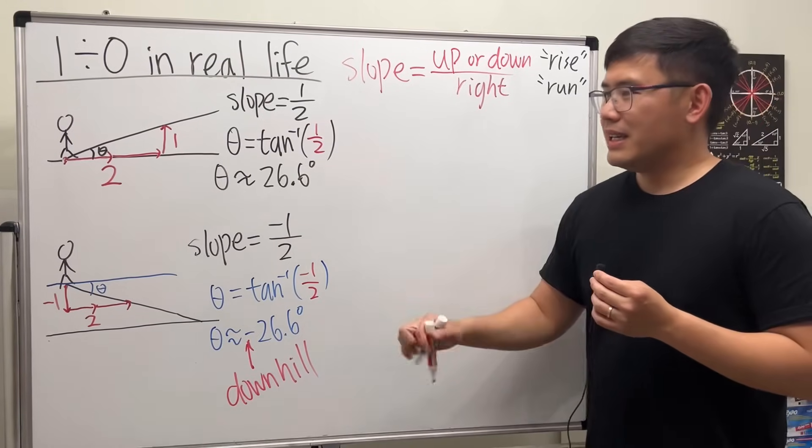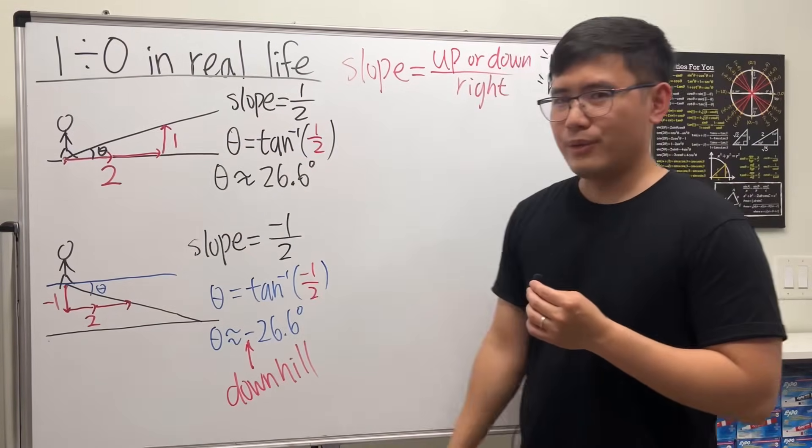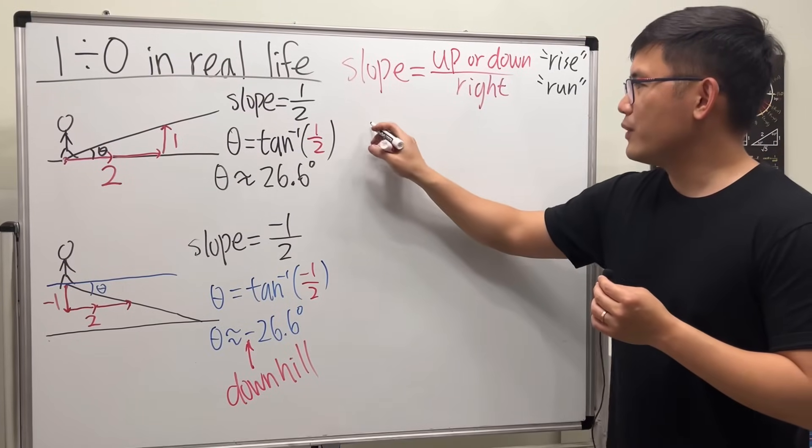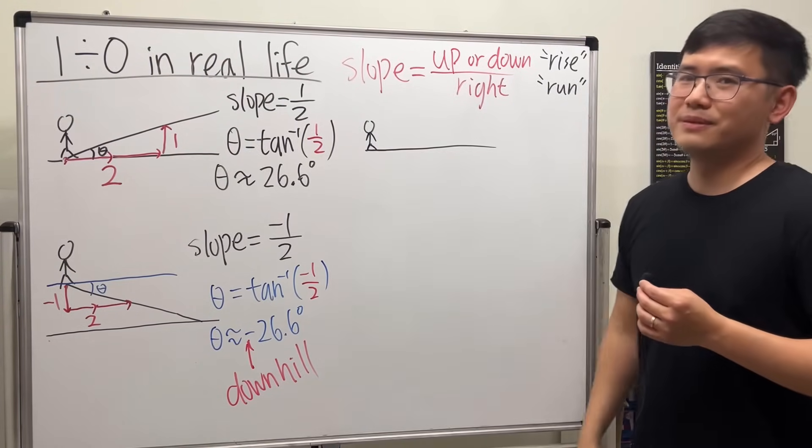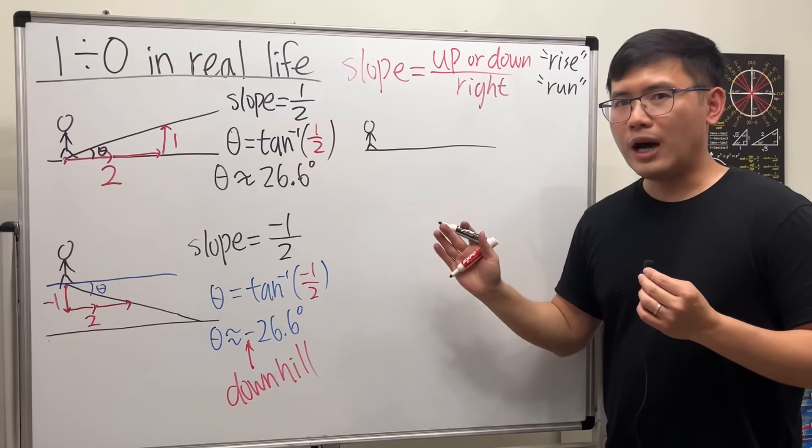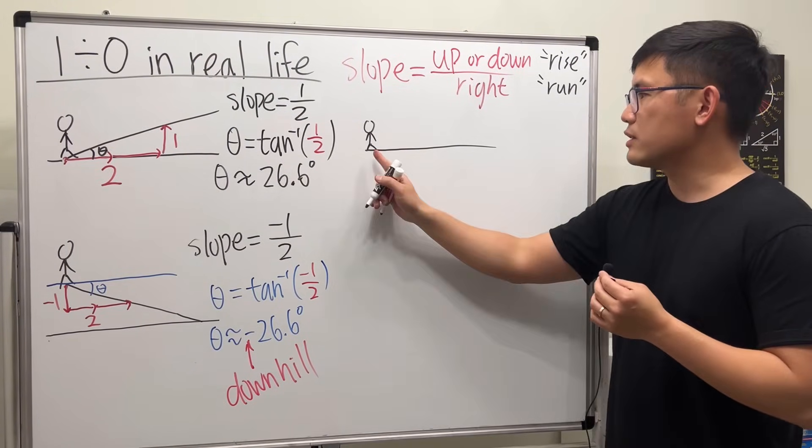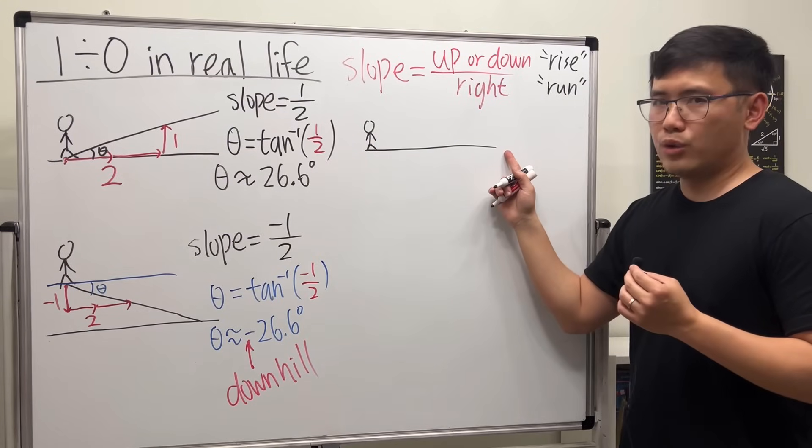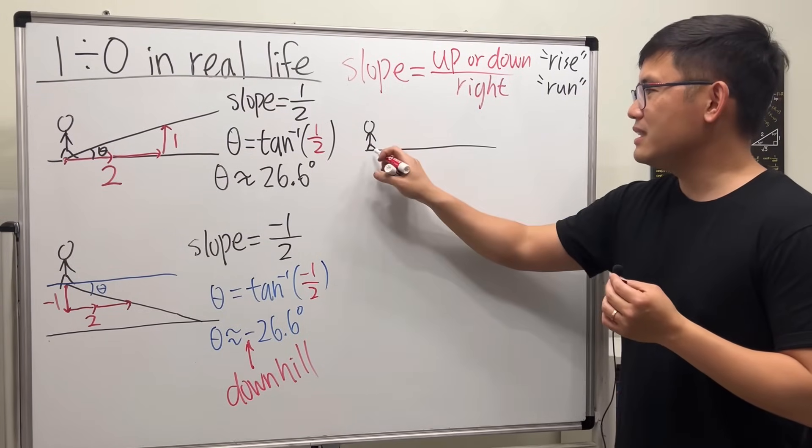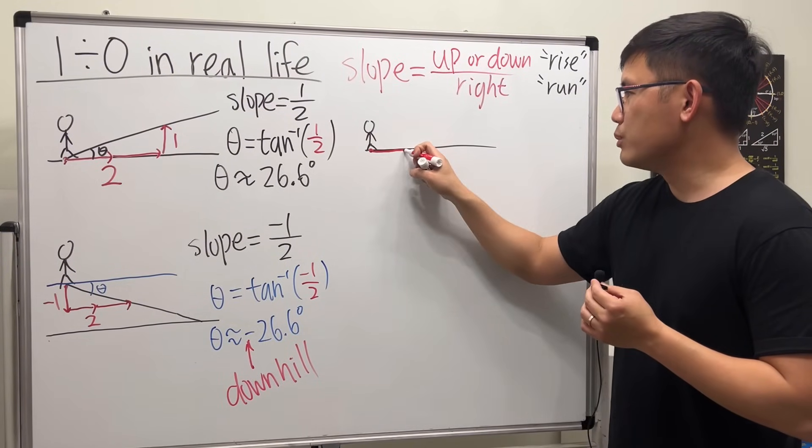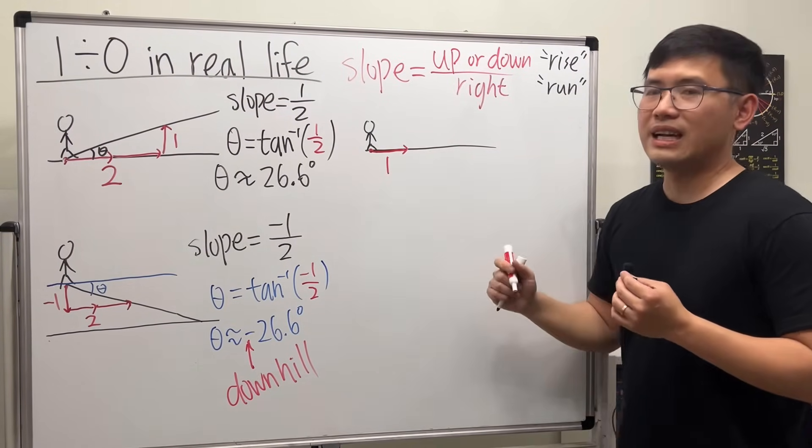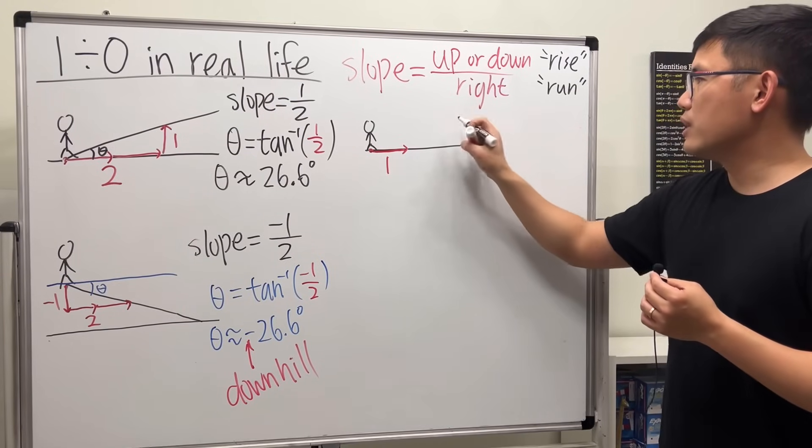Suppose you don't want to go uphill or downhill. What if you're just right here and want to walk regularly? We don't go up, we don't go down. In this case, what's the slope of this road? Well, we're not going up or down - we just move to the right one time. In this situation, the slope...